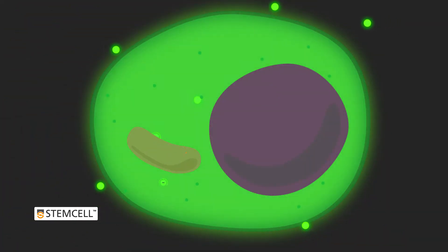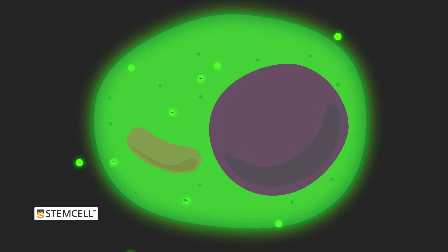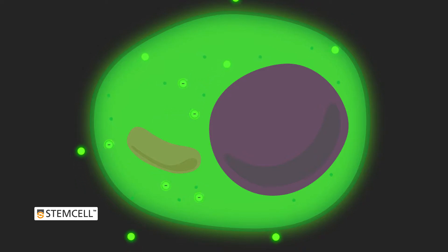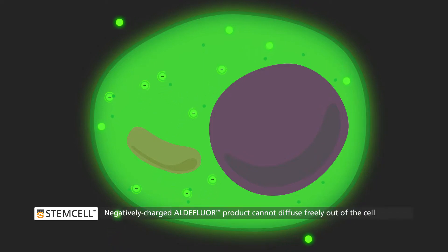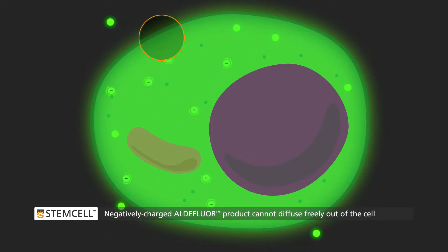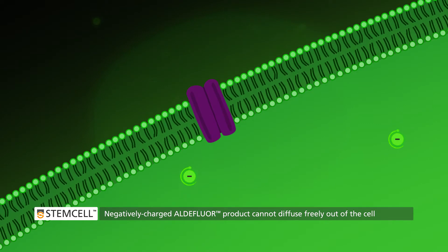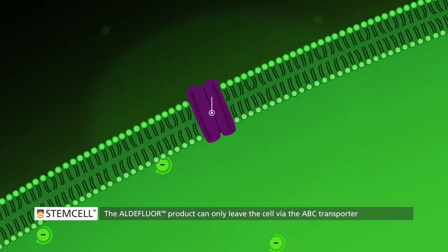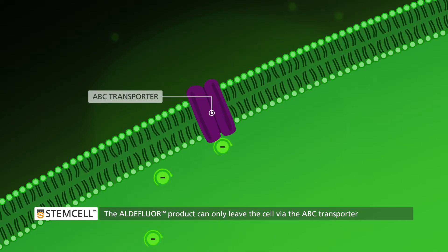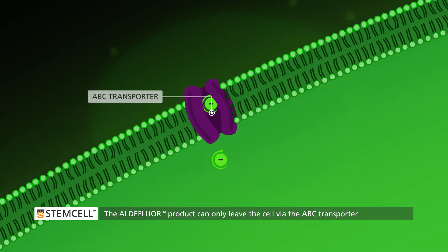As the Aldiflor substrate continues to freely diffuse into the cell, the ALDH enzyme will continually convert it to the negatively charged Aldiflor product. The negatively charged Aldiflor product can no longer diffuse freely out of the cell — it must be pumped out by the ABC transporter.